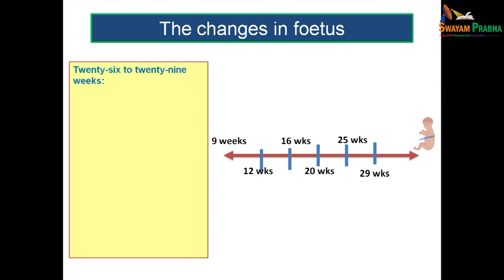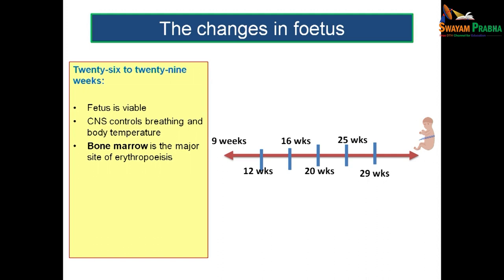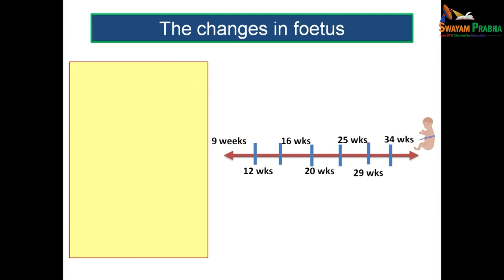From 26 to 29 weeks, the fetus is said to be viable — even if birth occurs, the fetus can survive in the outside environment. The CNS controls breathing and body temperature. Erythropoiesis occurs in the bone marrow during this period. The fetus is able to open its eyelids by 26 weeks, and toenails are also present.